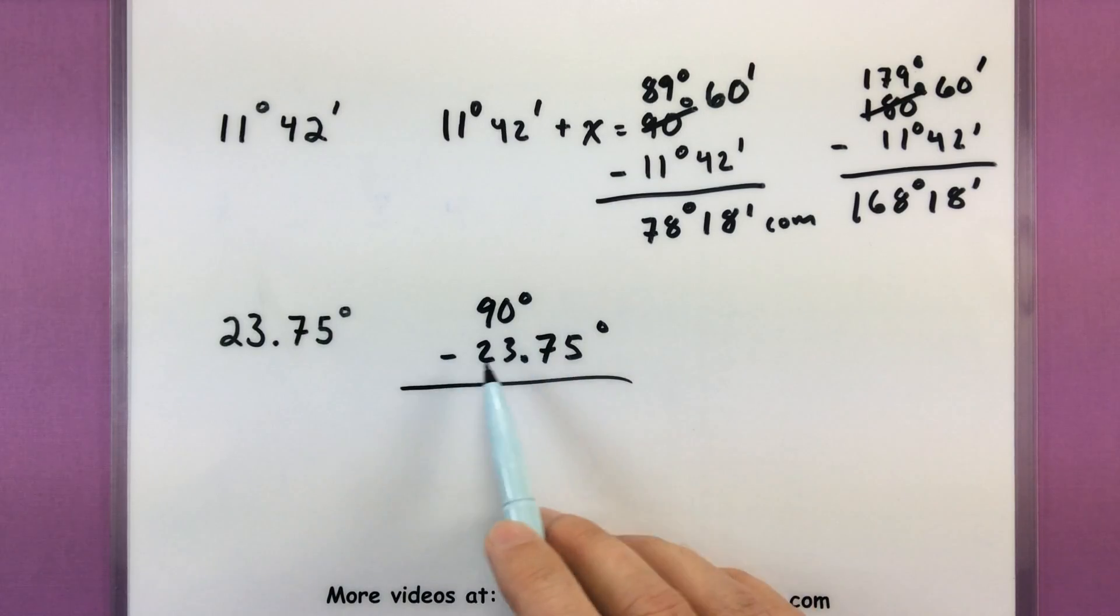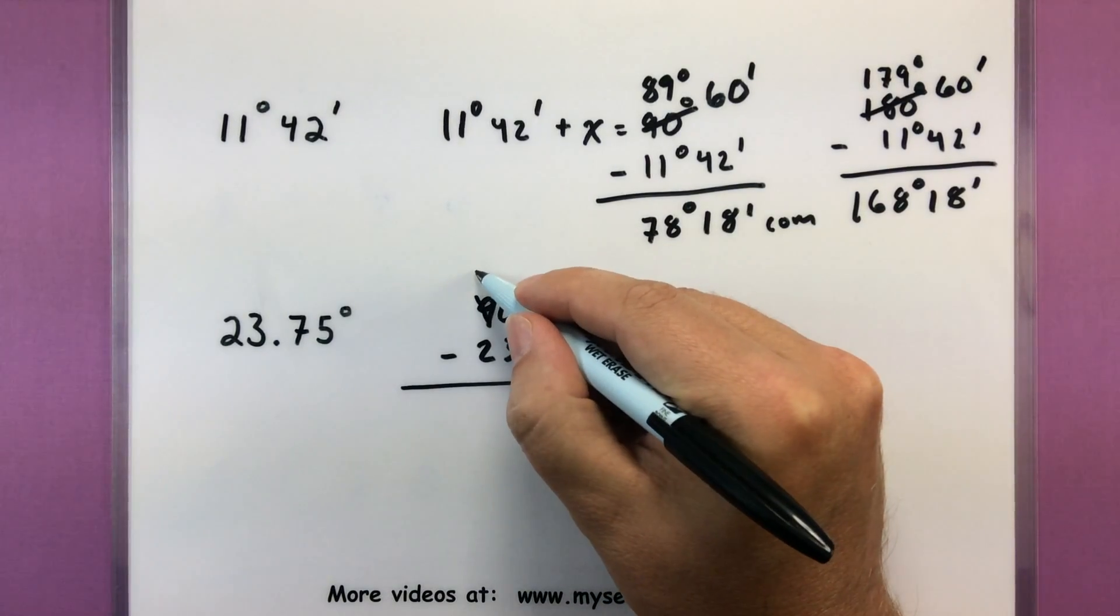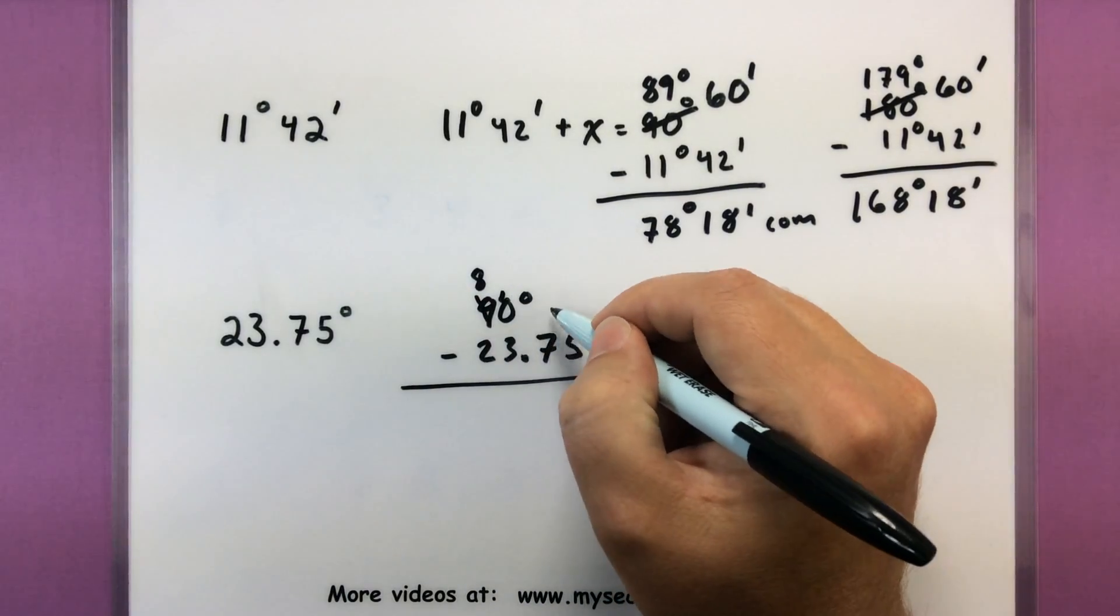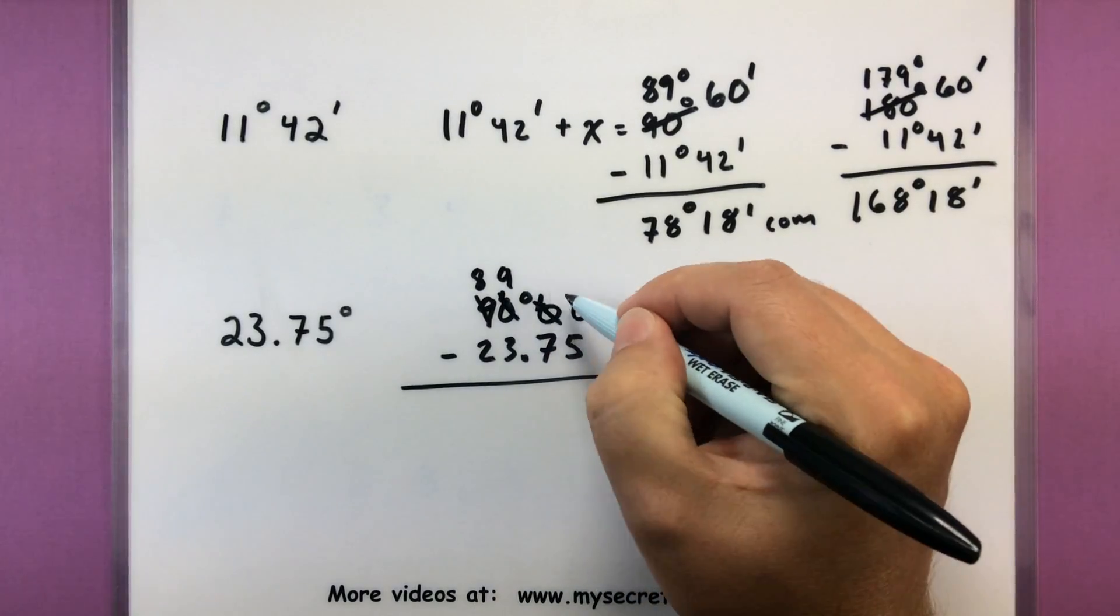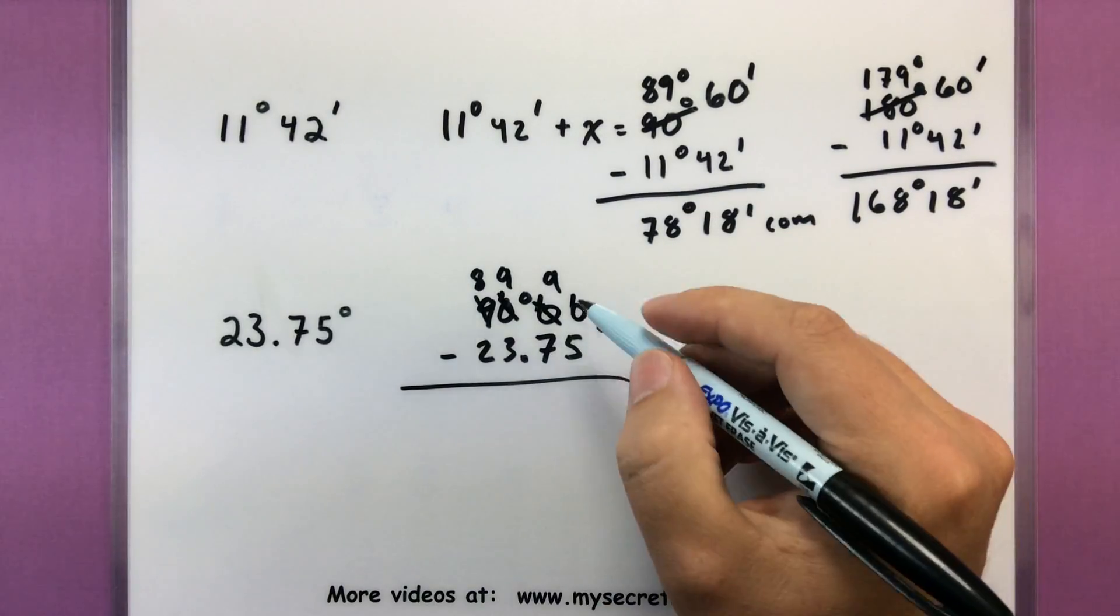So you can even do this on a calculator and just say, okay, what is 90 minus 23.75? Also works out pretty good. But anyway, I'm going to go through the process of borrowing so you can see how that works. So I'm going to turn this into an 8 so I can make that one a 10. Let's go ahead and put in some additional zeros. Make that into a 9 so I can make this one a 10. Make that into a 9 so I can make the last one a 10.